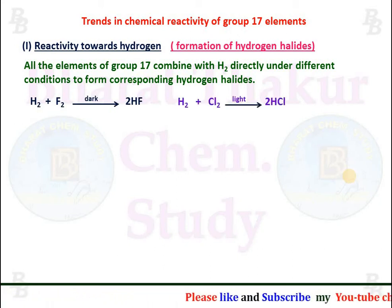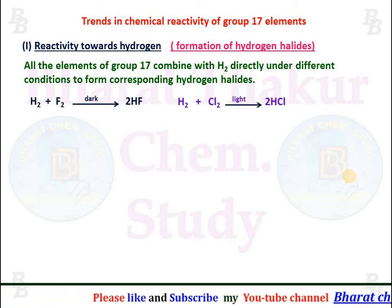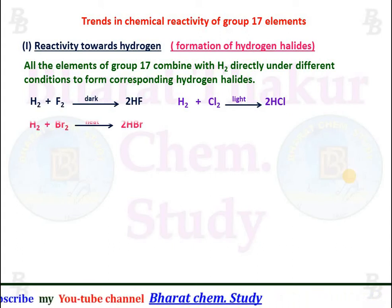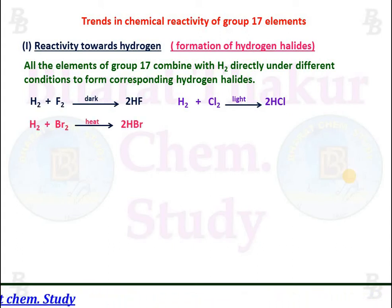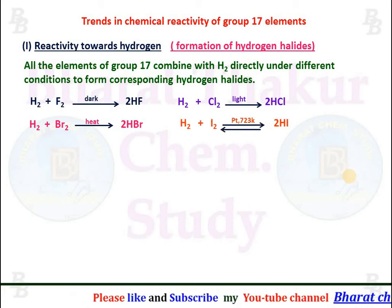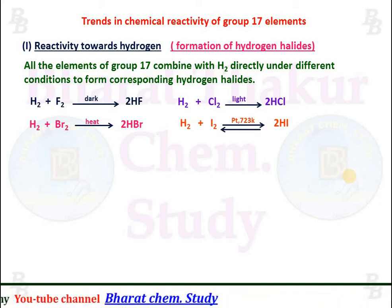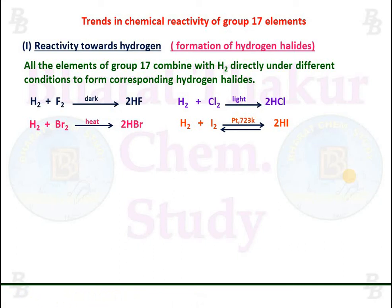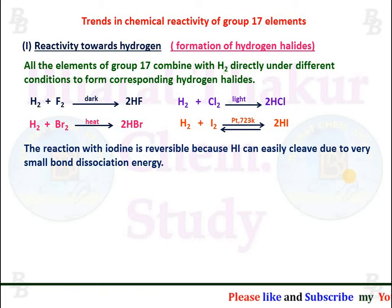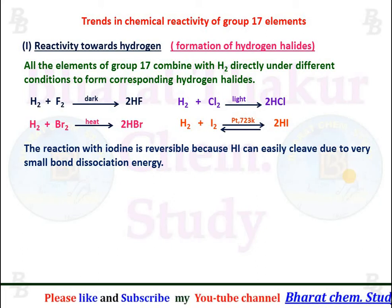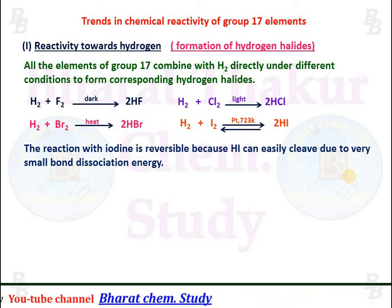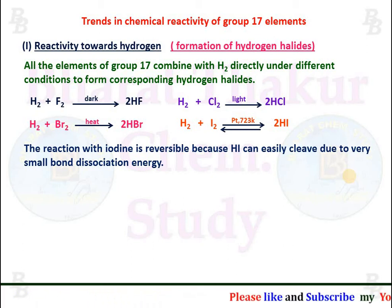Chlorine reacts with hydrogen in the presence of diffused sunlight to form HCl. Bromine reacts with hydrogen only on heating to form HBr. Iodine reacts with hydrogen in the presence of a catalyst, platinum, to form HI. This reaction is reversible in nature because HI can easily cleave due to very small bond dissociation energy, to give back iodine.